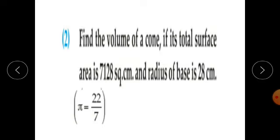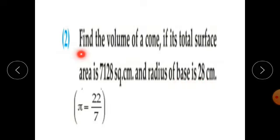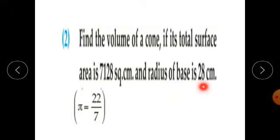Now question number 2: Find the volume of a cone if its total surface area is 7128 square cm, radius of base is 28 cm, and the value of pi is 22 upon 7. First, use the formula of total surface area of a cone to find out L.